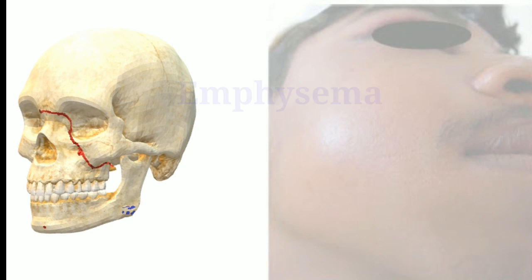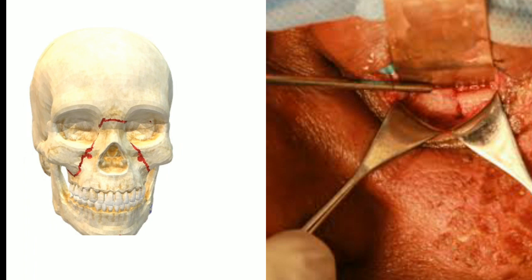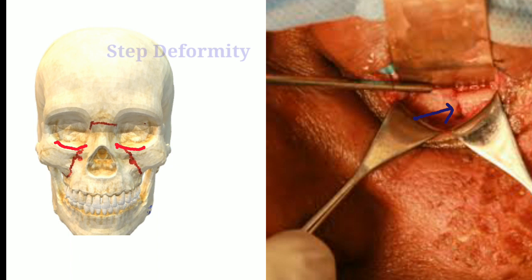Since the fracture involves the inferior orbital margins, on palpation there will be a step deformity. If there is involvement of the infraorbital foramen, there will be paresthesia in the region supplied by the infraorbital nerve. That covers the clinical features of LeFort 2 fracture.